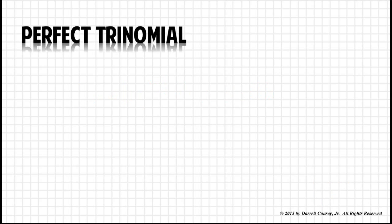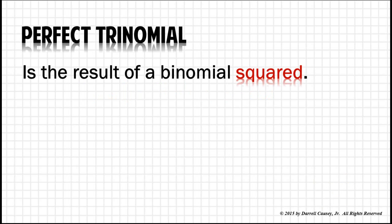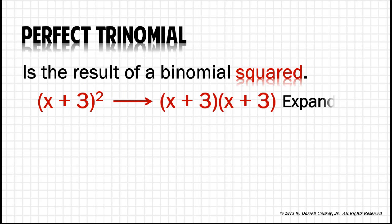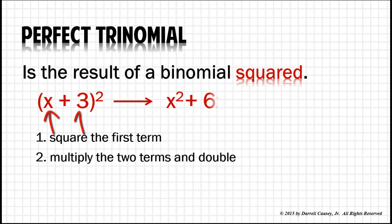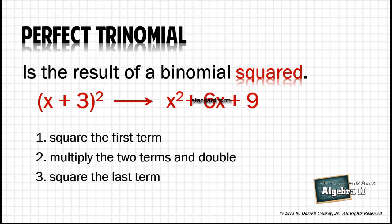And then we need to make sure we know what a perfect trinomial is. A perfect trinomial is the result of a binomial squared. So X plus 3 squared actually means X plus 3 times X plus 3 when we expand it out. So a quick way to do this is square the first term, X squared. Multiply the two terms and double, 3X doubled is 6X. And then square the last term. And there you have a perfect trinomial.